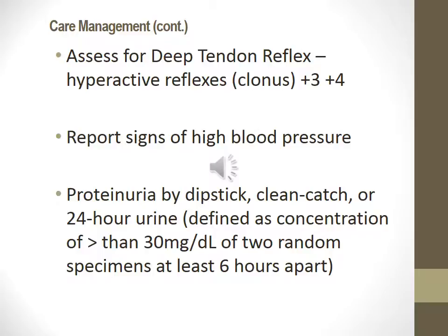Assess for deep tendon reflexes — hyperactive reflexes of 3+ or 4+. Also assess for signs of high blood pressure and protein in the urine by dipstick, clean catch, or 24-hour urine, defined as a concentration of greater than 30 mg per deciliter in 2 random specimens at least 6 hours apart. If you have a patient on a mag sulfate drip for seizures, you will also assess neurological status frequently. A decrease in deep tendon reflexes or a decrease in urinary output are both signs of toxicity. You are constantly checking neural status, deep tendon reflexes, and urinary output for a patient on mag sulfate drip.